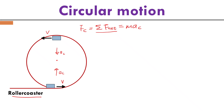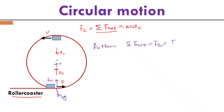Let's do a free body diagram for the roller coaster at the bottom and at the top. For the roller coaster at the bottom, I consider the direction going up as positive because this direction points to the center. The roller coaster is under gravity and also under normal force. So the net external force pointing to the center equals normal force minus gravity, which equals mass times centripetal acceleration.